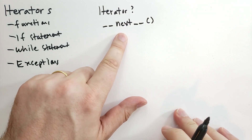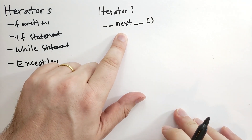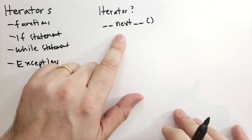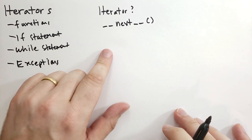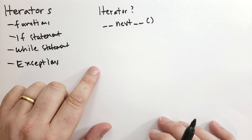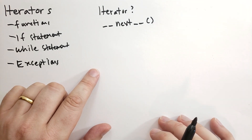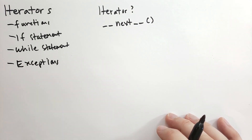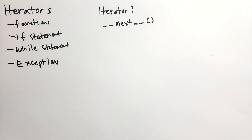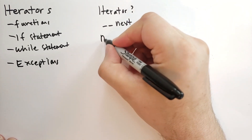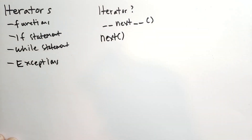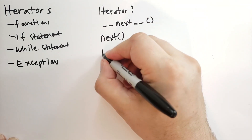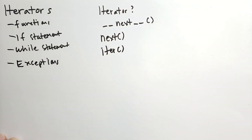Iterators iterate across a sequence. That sequence could be in memory, but it doesn't need to be. The iterator remembers where it is, what the next value is, and how to get to it. Some iterators can also generate values in their sequence by a function — for instance, the Fibonacci series being generated rather than stored in memory. Iterators can be called with the next method and are also returned by the iter function.